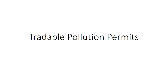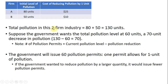In this example, we're going to look at tradable pollution permits. We have a two-firm industry, Firm A and Firm B, and each are currently emitting a certain level of pollution. Firm A is emitting 80 units, Firm B 50 units of pollution. So in total, we have 130 units of pollution in this industry.